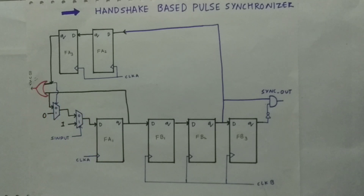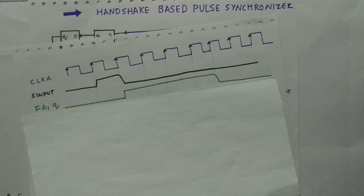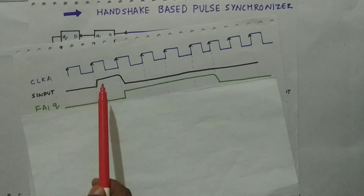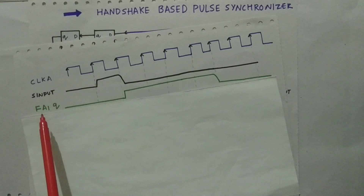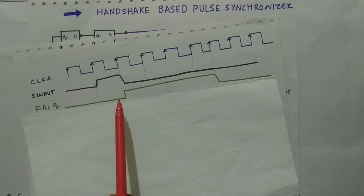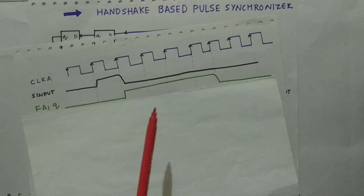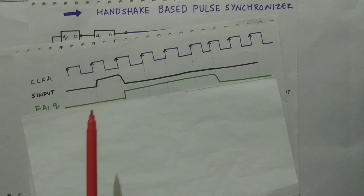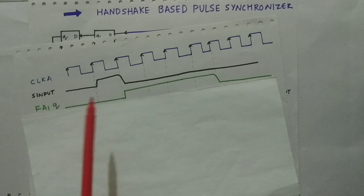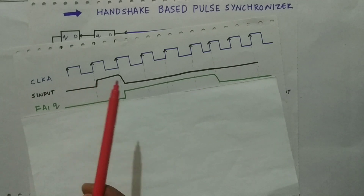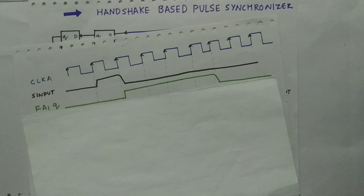As shown in the diagram, when we give S input as a pulse, FA1 generates a level output. A pulse is being converted to a level — this is what happens in that part of the circuit.